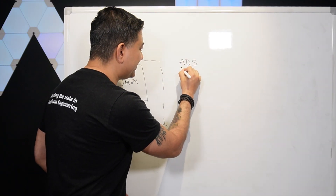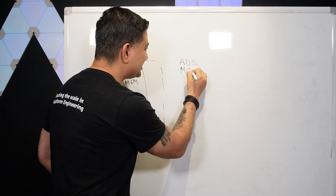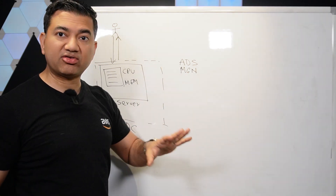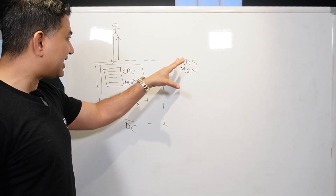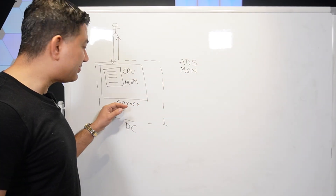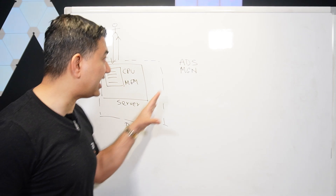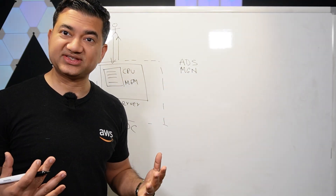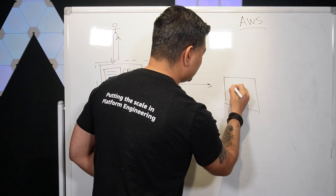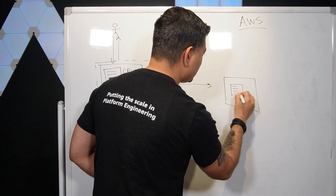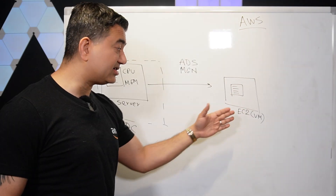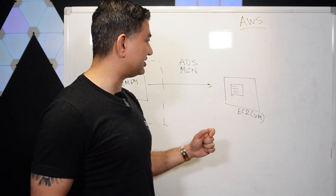The next service you need to master is AWS MGN, or Application Migration Service. After ADS discovers everything, MGN can migrate on-premises servers to AWS servers, which is EC2 — also called a virtual machine. This side is now AWS, and your application code is running in EC2.